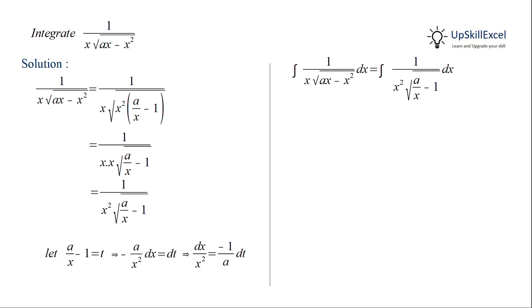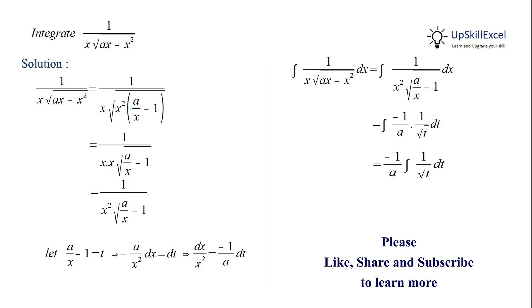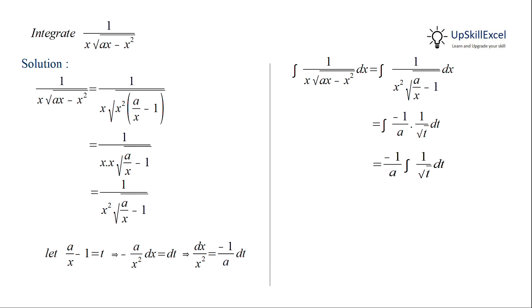Substituting a over x minus 1 equal to t and dx over x squared equal to minus 1 over a dt, the integral becomes minus 1 over a times the integral of 1 over root t dt. Since minus 1 over a is a constant, we take it outside, and the integration of 1 over root t is 2 root t.